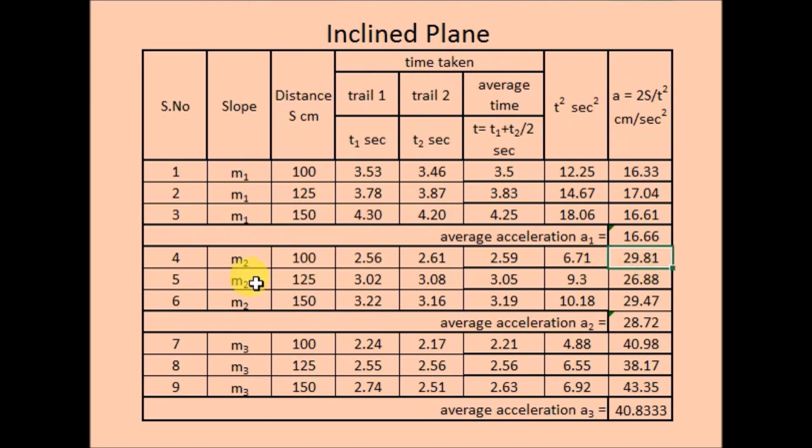M2 100 acceleration. For the slope m2 distance 125 what is acceleration? For the slope m2 150 distance acceleration. Average of these three accelerations is calculated. Similarly for third slope m3. For 100, 125 and 150 distances. Accelerations are calculated and their average is noted. 40.83 cm per second square. This is the average value of acceleration.